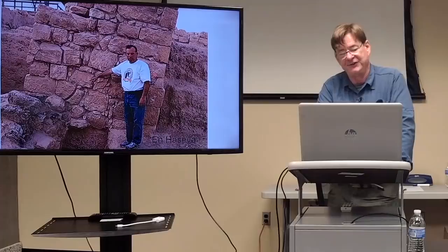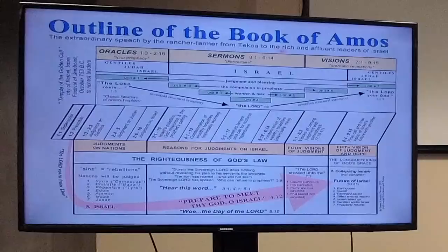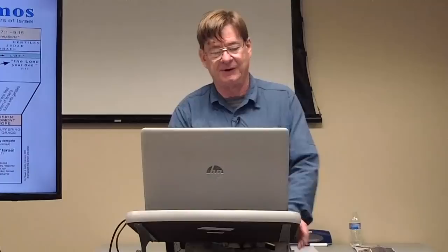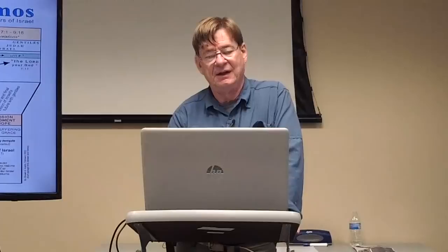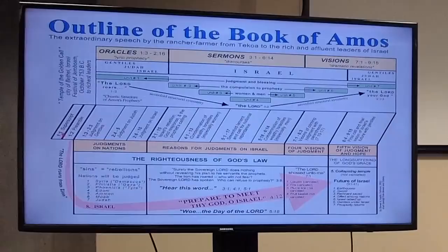The book of Amos is the extraordinary speech of a rancher-farmer from Teccoa to the rich and affluent leaders of Israel. He says 'prepare to meet thy God, O Israel.' The book is about the judgment of God coming on the land of Israel. The final vision in Amos is the vision of a collapsing temple, and it sounds like an earthquake. The preamble and superscript of the book of Amos is really interesting.